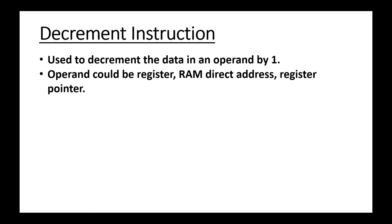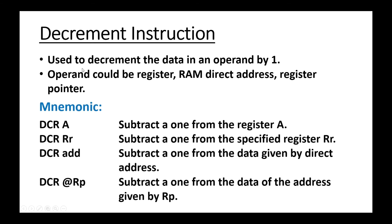Next instruction is the decrement instruction. It is used to decrement the data in the operand by one — basically it performs a subtraction, subtracting one from the operand. The operand could be a register A, RAM direct address, a pointer, or RAM indirect address. The variations are: DCR A subtracts one from the accumulator; DCR R subtracts one from the specified register R0 to R7; DCR address subtracts one from the data at the given direct address.